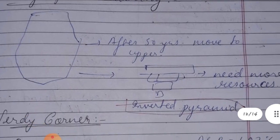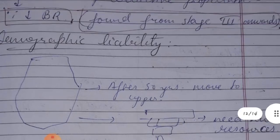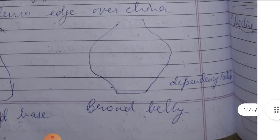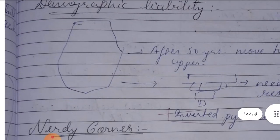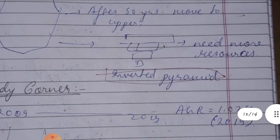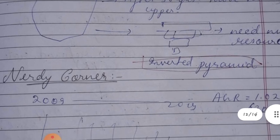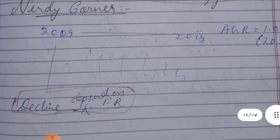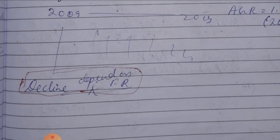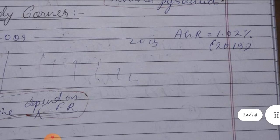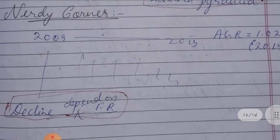Regarding Demographic Liability: after 50 years, the broad-base pyramid shifts to an inverted pyramid shape, meaning more resources are needed for the elderly who are now dependent — this is demographic liability. In India, the annual growth rate is 1.0% based on 2019 data. Thanks for watching.